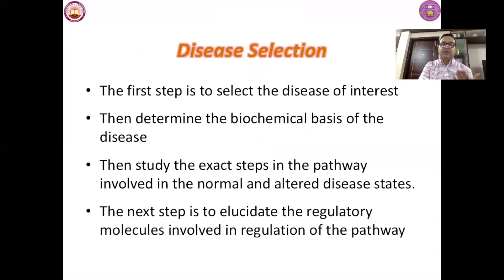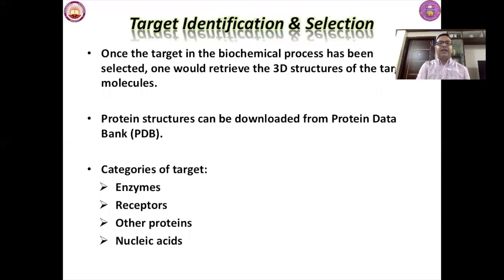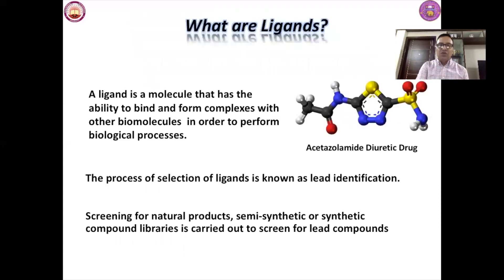To summarize the overall process: disease selection is the critical first step. You select the disease of interest, determine the biochemical basis of the disease, study the exact states in the pathway involved in normal and altered disease states, elucidate the regulatory molecules involved, and then proceed to target identification and selection. Once a target in the biochemical process is selected, you retrieve the 3D structure from the Protein Data Bank (PDB). Target categories include enzymes, receptors, other proteins, and nucleic acids.